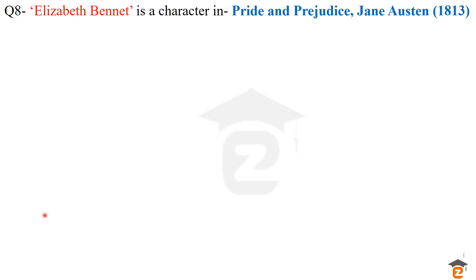Question number 8: Elizabeth Bennett is a character in which novel? The answer is Pride and Prejudice, written by Jane Austen and published in 1813. Elizabeth Bennett was the main character of the novel. Jane Austen's novels were related to domestic life — her novels like Pride and Prejudice, Sense and Sensibility, Emma, and Persuasion were known as domestic novels.